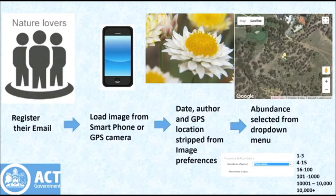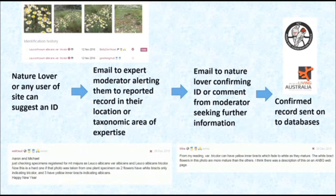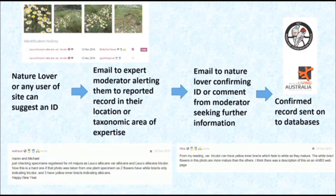How does it work? It's similar to a lot of other things you've heard about today. A nature lover takes a photo on either their smartphone or GPS-enabled camera. They load that into the system and log in as a user. Their name, the date of the photograph, and where it was located is stripped out. You get a location, and we also ask them to give a measure of abundance. If they think they know what the species is, they can suggest it from a drop-down menu, or just say they don't know. An email is then sent to one of 70 volunteer moderators, who look at that image and identify it.